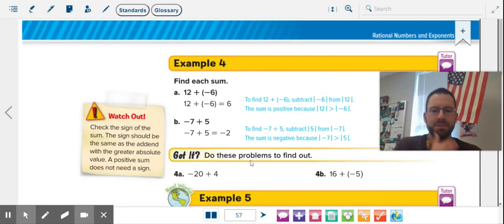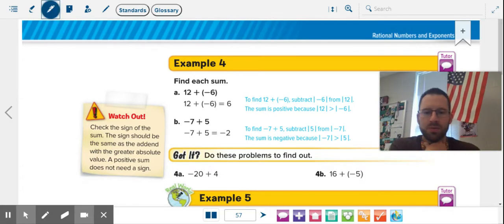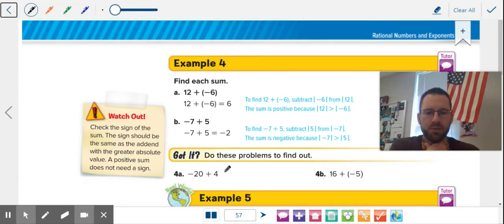Let's take a look at these. Negative twenty and four. Negatives have more power. Different signs. Twenty minus four is sixteen. Here, positives have more power, so it's going to be a positive answer. Opposing signs, sixteen minus five is eleven.